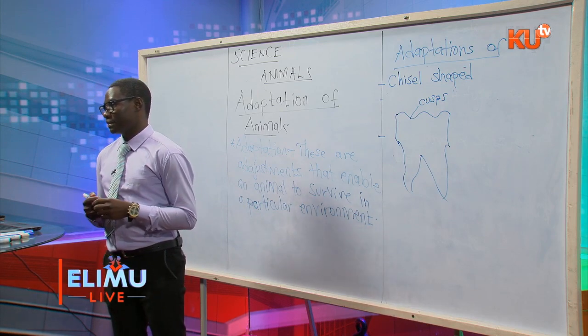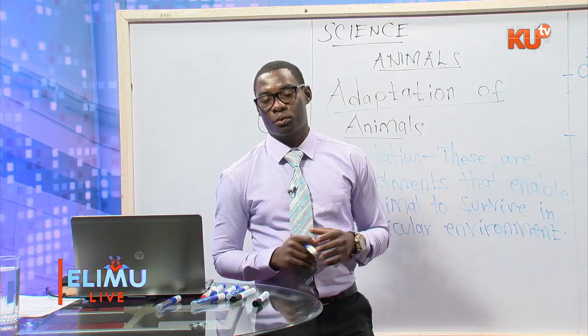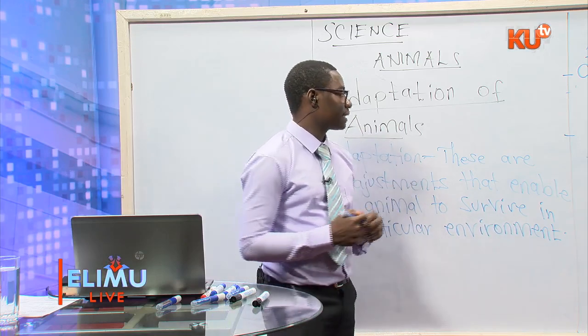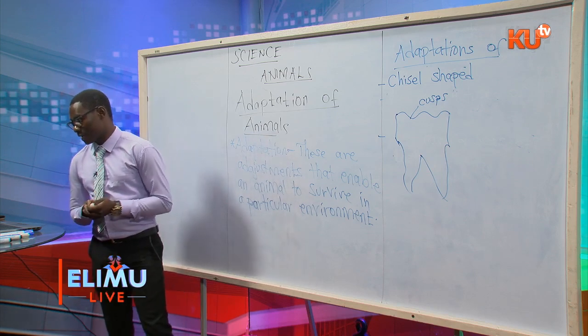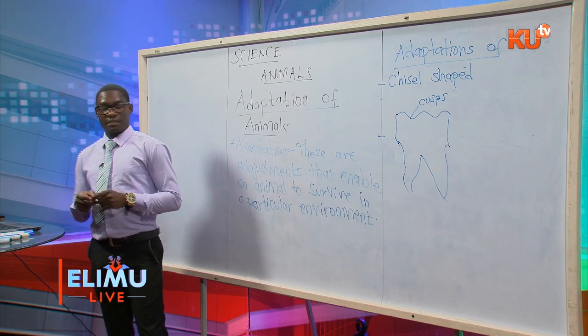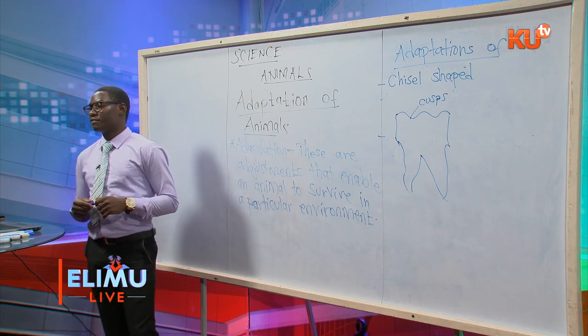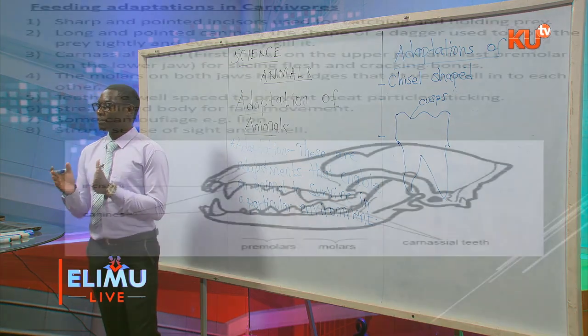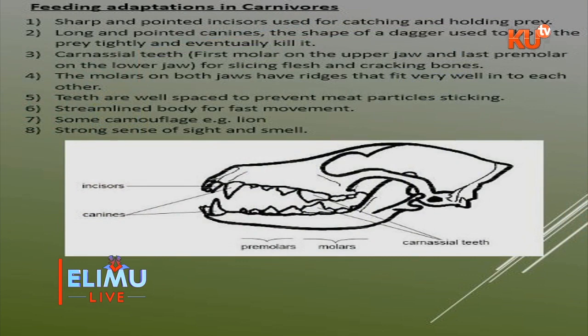Meat is a hard substance, so the animal has to chew it properly — that is why the cusps and ridges fit into each other very well. The teeth of carnivorous animals are also well spaced from one tooth to the other. The purpose of them being spaced is to avoid food particles sticking in between the teeth.